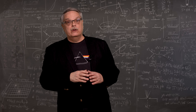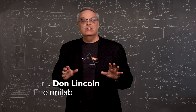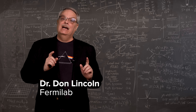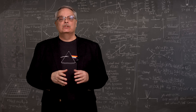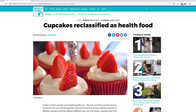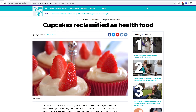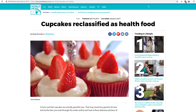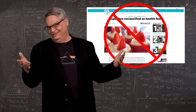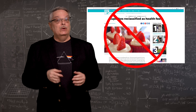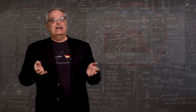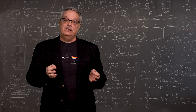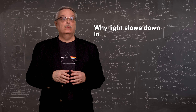The Internet is a very powerful tool, putting the knowledge of humanity at our very fingertips. However, the Internet is also a source of misinformation. You can hear all sorts of explanations, stated authoritatively and with good intentions, but also utterly and totally wrong. So in this video, I thought I'd address a common one and give a correct explanation for why light slows down in water.